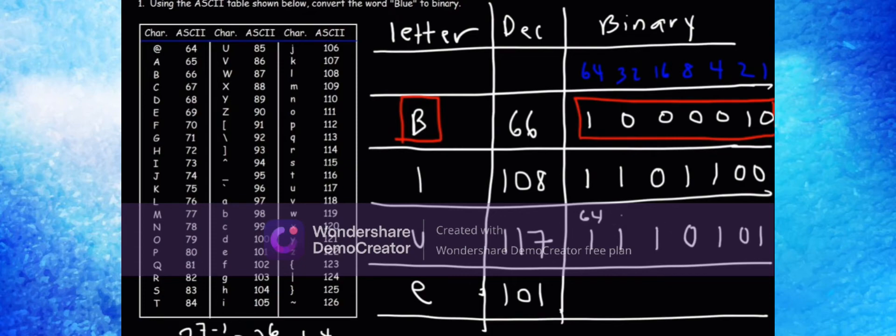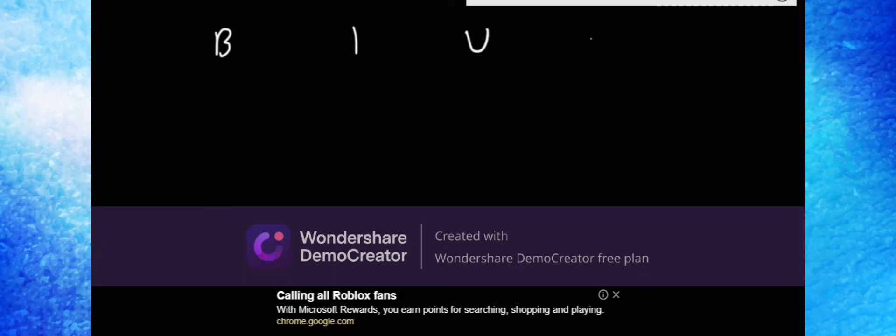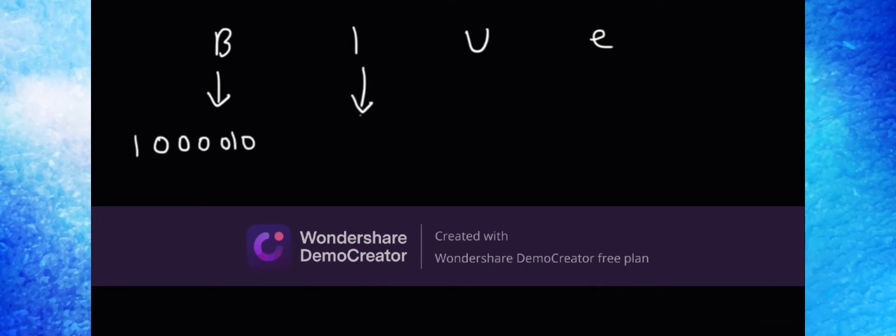Now for the letter E, we need to get 101. We need to add up 64 and 32, that's 96. We only need 5 more to get to 101, so we're going to use the 4 and the 1. So it's 1100101. That's how you can use the ASCII table that was given to you to convert a word into binary.